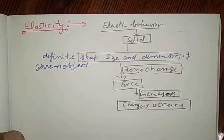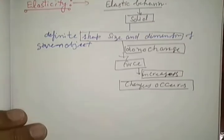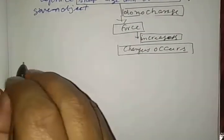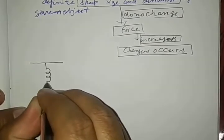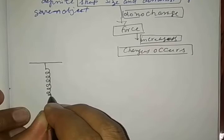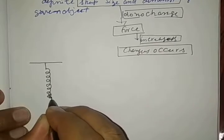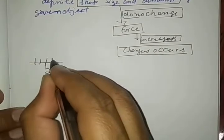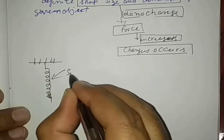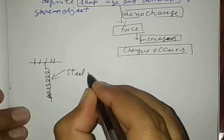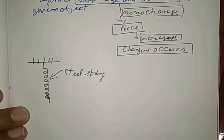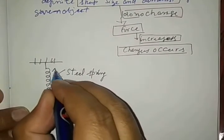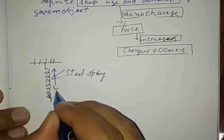Now see two examples. In the first example, let us see one of the springs made up of steel. This steel spring has a certain length L.